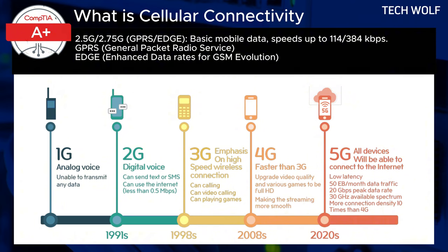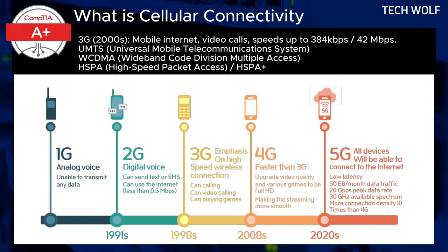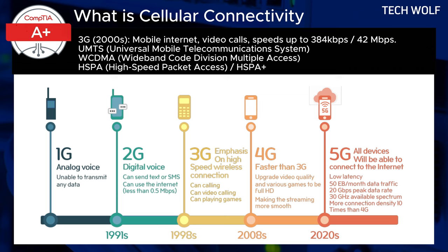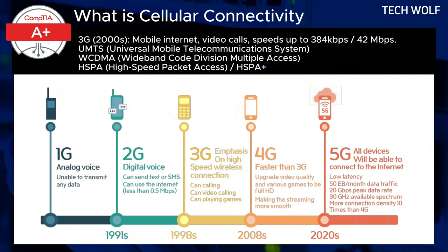3G, or third generation networks, introduced in the early 2000s, provided a significant improvement in data speeds and capabilities, supporting mobile internet, email, and early video streaming. Key standards included UMTS (Universal Mobile Telecommunications System), based on WCDMA (Wideband Code Division Multiple Access), and later HSPA (High Speed Packet Access). The initial speed of 3G networks was 384 kilobits per second, with later advancements like HSPA+ offering up to 42 megabits per second. This enabled mobile web browsing, video calls, and streaming.